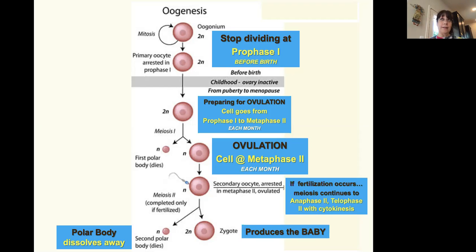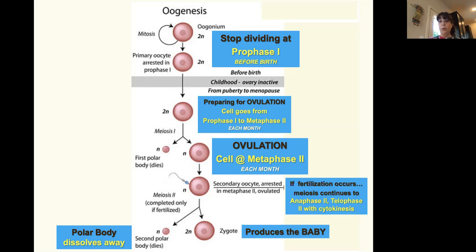The polar body does have DNA, but being so small it doesn't have enough organelles or cytoplasm to produce a baby. However, sometimes the division isn't as unequal as it's supposed to be — it gives a little more cytoplasm and more organelles to the polar body. If it's big enough and gets fertilized, you can get a fraternal twin called a polar body baby. Polar body babies tend to have one that's bigger than the other during development.